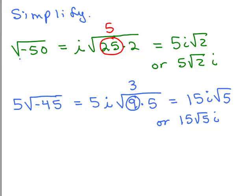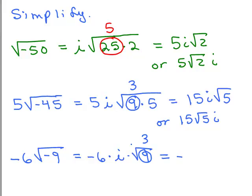Notice something important: when you take the square root of a negative number, the answer is not negative — it's complex, it's an imaginary number. If we have a minus sign out in front, like negative 6 times square root of negative 9, we write negative 6 times i times square root of 9, which is 3. So negative 6 times 3 gives negative 18i. This is still a complex number — an imaginary number where the coefficient is negative 18. When we talk about positive and negative numbers, we're basically talking about real numbers; here, negative 18 is simply the coefficient of i.